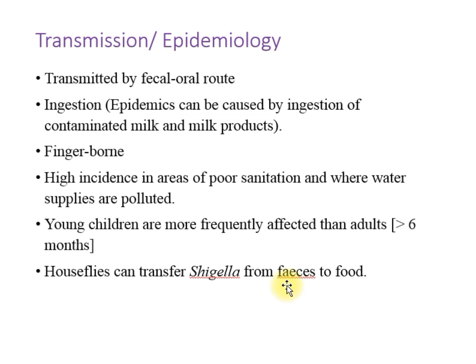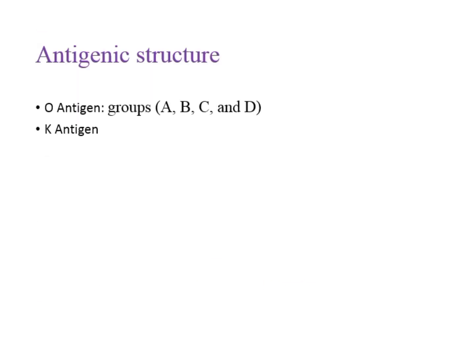When the same house fly sits on uncovered food, Shigella is transferred to that food. The antigenic structure of Shigella: as it is a gram-negative bacteria, it has a somatic antigen O, on the basis of which it is classified into groups A, B, C, and D. There is also a K antigen. These antigens don't play a role in virulence but are useful for serotyping of Shigella isolates.